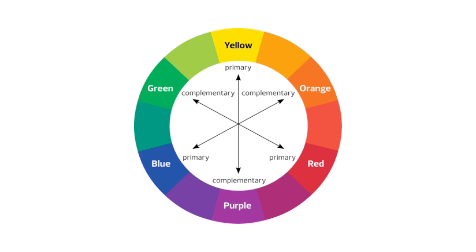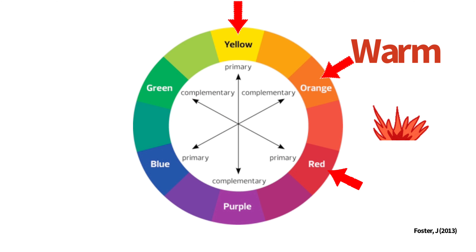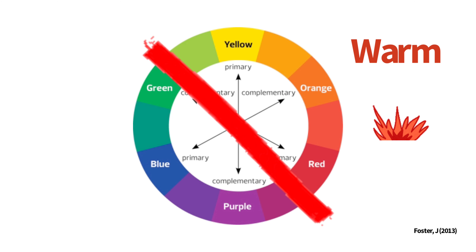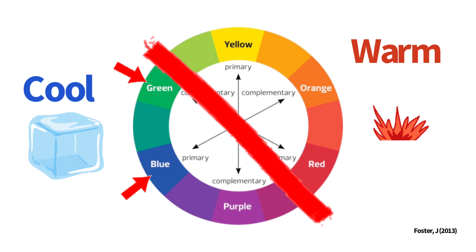Let's move on to warm and cool colors. Just divide your color wheel in half and you have your warm colors on one side, which consists of reds, oranges, and yellows. Then moving to the other side, you have your cool colors, which consists of blues, greens, and purples.